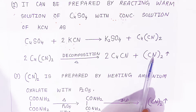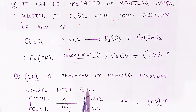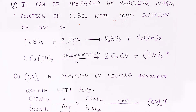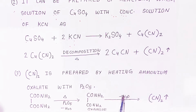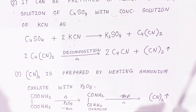The third preparation method: cyanogen is prepared by heating ammonium oxalate with phosphorus pentoxide. In the presence of phosphorus pentoxide, when you heat ammonium oxalate, it eliminates water molecules and converts into oxamide. When you further heat this compound, there is a removal of two more water molecules, and you get cyanogen. This is a very important preparation method.